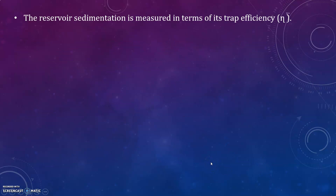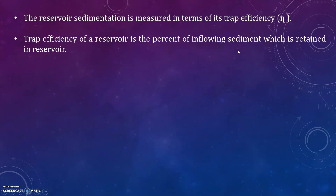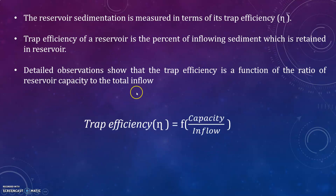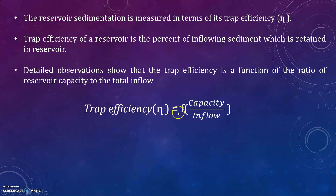Reservoir sedimentation is measured in terms of its trap efficiency. The trap efficiency of a reservoir is the percent of inflowing sediment which is retained in the reservoir. Observations show that trap efficiency is a function of the ratio of reservoir capacity to the total inflow: Trap Efficiency = f(Reservoir Capacity / Total Inflow).